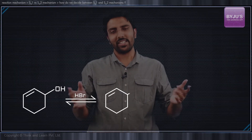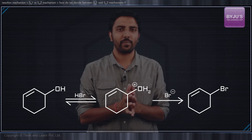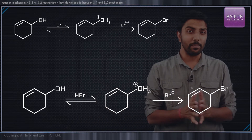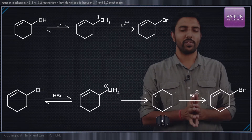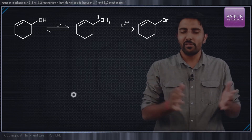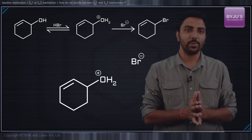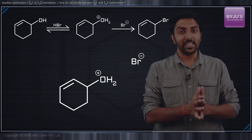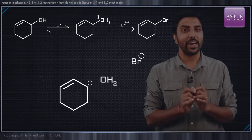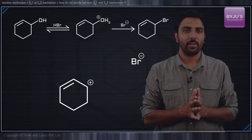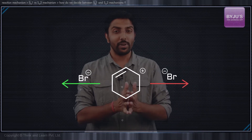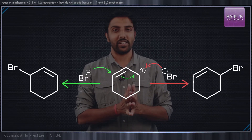For instance, look at this reaction. The first step is the formation of the carbocation. This is achieved by protonation of the OH group, and since H₂O is a very good leaving group, it leaves behind a carbocation. This carbocation is stabilised by delocalisation of charge.